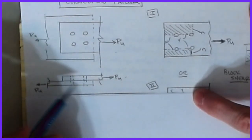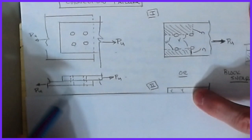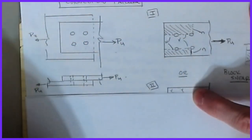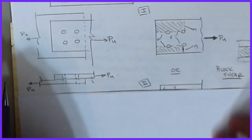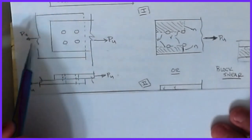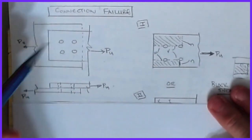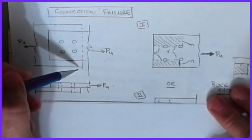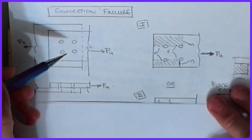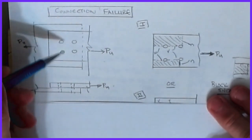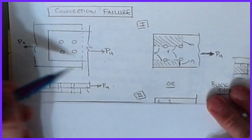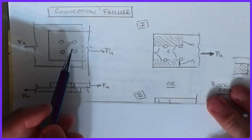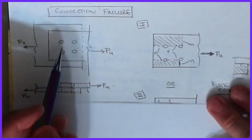We'll talk more about shear planes, single shear, and double shear when we cover bolts, but that's not our concern for this video. Setting that aside, beyond what we've already studied in tension member analysis — gross yielding, net fracture, staggered holes, effective net areas — we need to ask whether there are any other phenomena we should be concerned about.